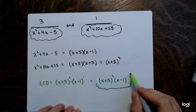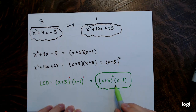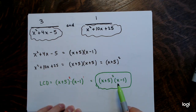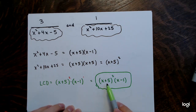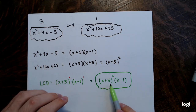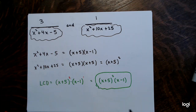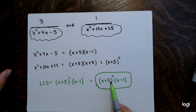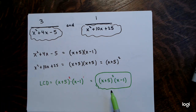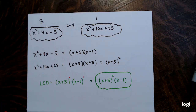The LCD is (x plus 5) squared times (x minus 1). That is the least common multiple of these two denominators. I prefer leaving the LCD in factored form — it will make addition, subtraction, and simplification of fractions easier.